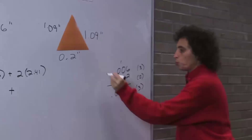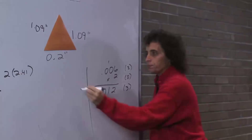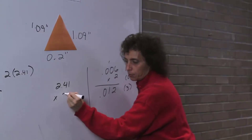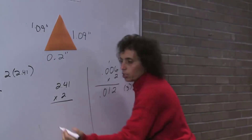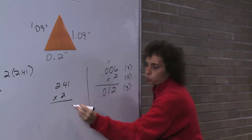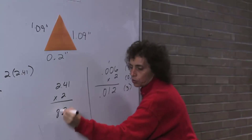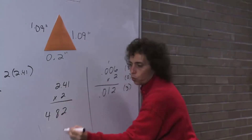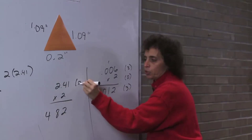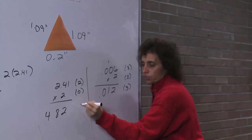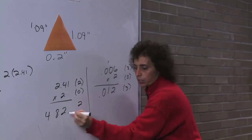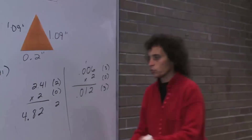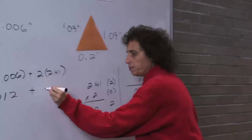Then 2 times 2.41: 2 times 1 is 2, 2 times 4 is 8, 2 times 2 is 4 — remember, 2 decimal places — gives us 4.82.